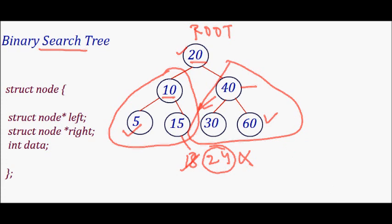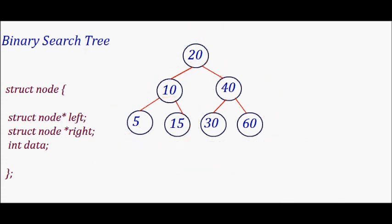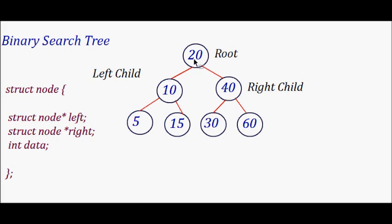To recap the terminology: node 20 is the root. Node 10 is the left child of parent node 20, and the right child of parent node 20 is also shown. Node 30 is the left child of node 40, and node 60 is the right child of parent node 40.